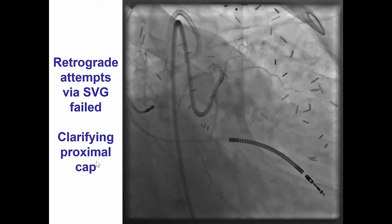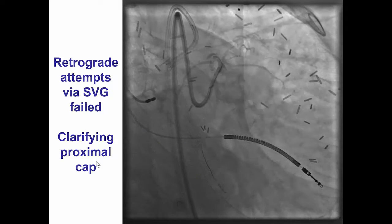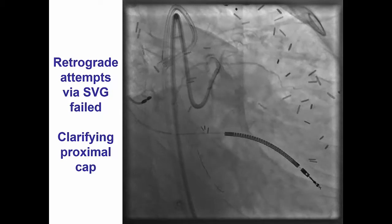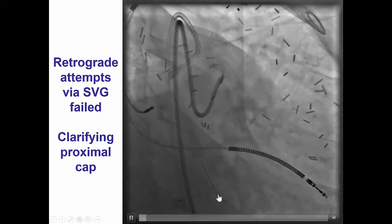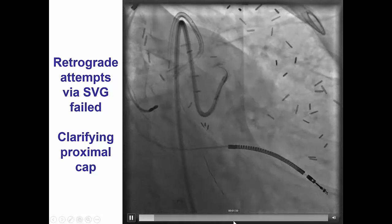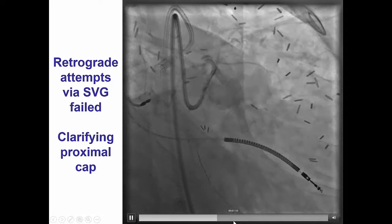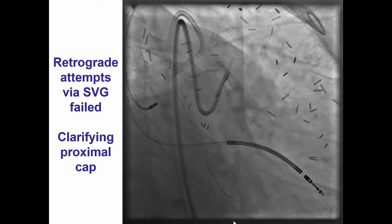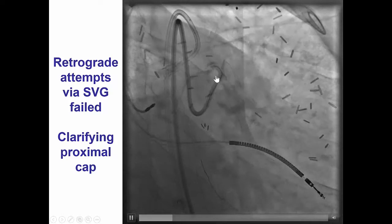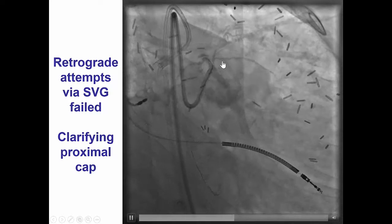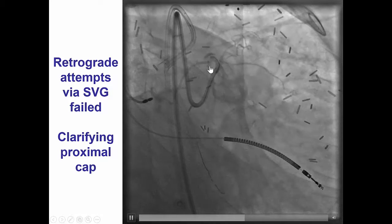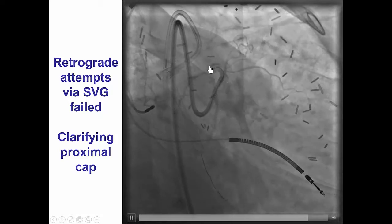As a first attempt we tried retrograde again with a different microcatheter, but we were unable to advance the microcatheter past the distal saphenous vein graft. As a result, we converted to the antegrade approach, and because of the proximal cap ambiguity, we knew we would have to perform some maneuver to resolve that ambiguity.